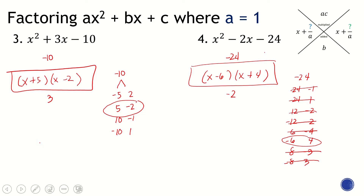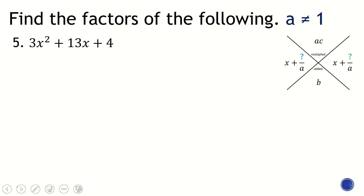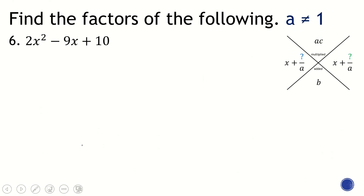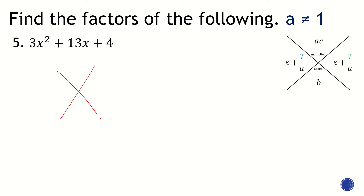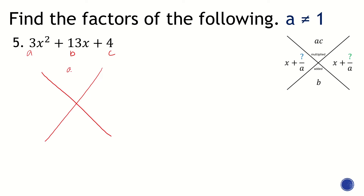Now what if A is not equal to 1? Let's apply the full X method. Here A is 3, B is 13, and C is 4. So AC equals 12. The formula will be X plus a number over 3, times X plus a number over 3, where the two numbers go in the numerators. Let's find pairs that multiply to 12: 12 and 1, negative 12 and negative 1, 6 and 2, negative 6 and negative 2, 4 and 3, negative 4 and negative 3.